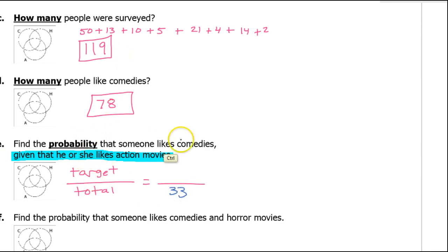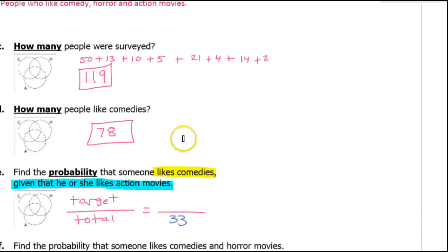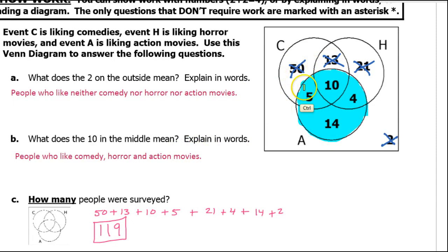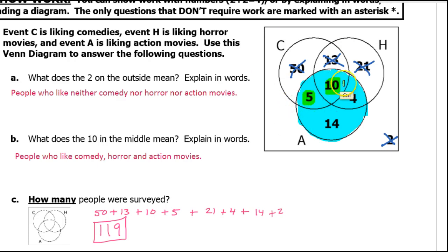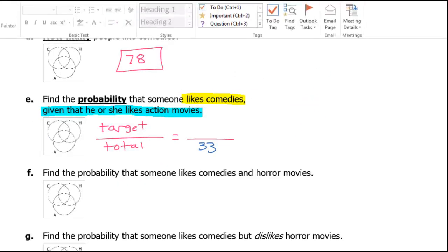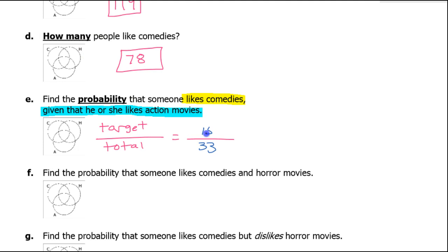Now, what about the target? The probability that someone likes comedies — that's the target. I need to highlight numbers that are in the comedy circle, being careful not to touch the numbers I crossed out. That's why I crossed them out, so I wouldn't be tempted to highlight the 50 or the 13. But the 5 and the 10 are comedy numbers within the comedy circle, so that's 15. Target over total is 15 out of 33. That is the probability. Of course, you could reduce that, turn it into a percent, whatever you want.